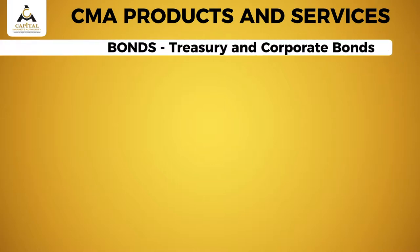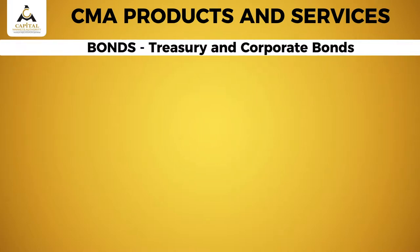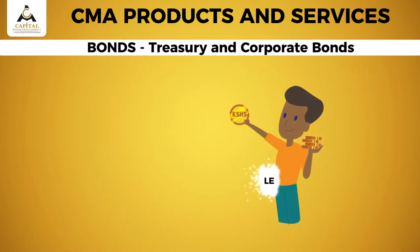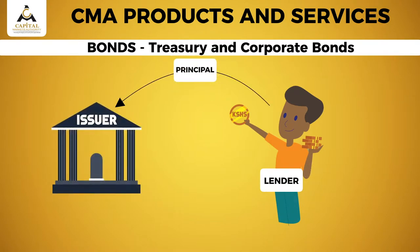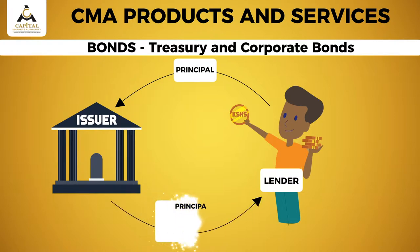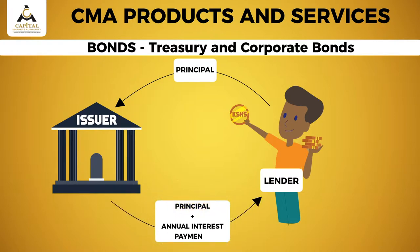Now let us take a look at bonds. This model involves the lender providing a principal amount to the issuer. The issuer then returns the principal with annual interest to the lender after a period of time.